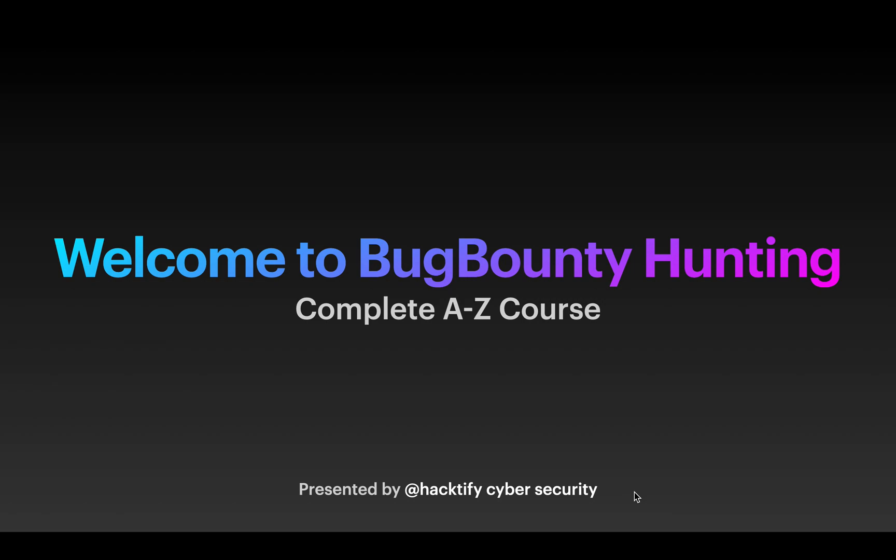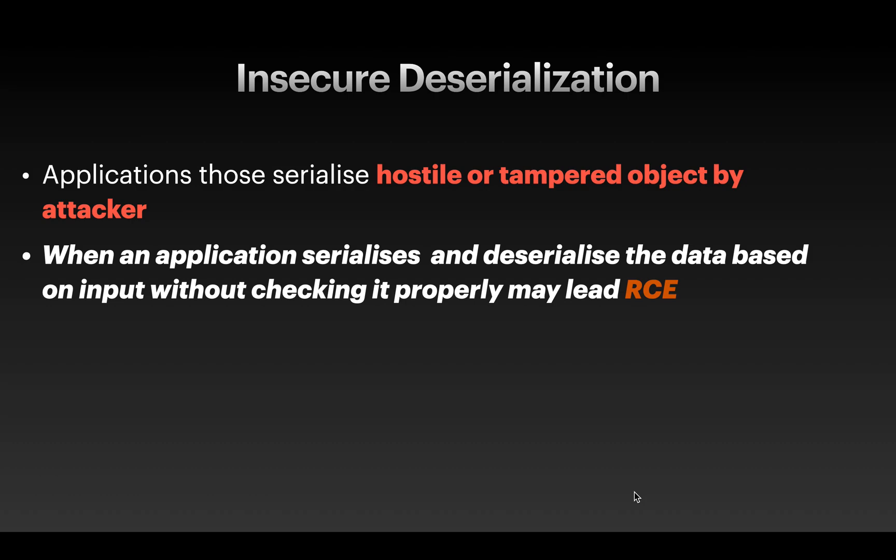The eighth vulnerability in OWASP is insecure deserialization. So what is insecure deserialization? If any application serializes data that can be tampered with or modified by an attacker, that application is vulnerable to insecure deserialization.